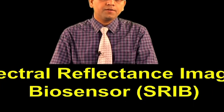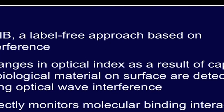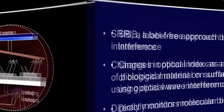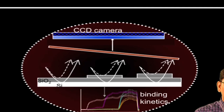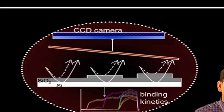Let us now discuss about spectral reflectance imaging biosensor or SRIB. It is a label free approach which is also based on interference. The changes in optical index as a result of capture of biological material on the surface can be detected by using optical wave interference. SRIB monitors molecular binding interactions directly. As shown in the slide, the principle of SRIB is discussed. The interference of light reflected from the silicon dioxide surface increases the optical path length difference, which is caused by the biomolecular binding, which in turn is measured by spectral reflectance imaging biosensor.